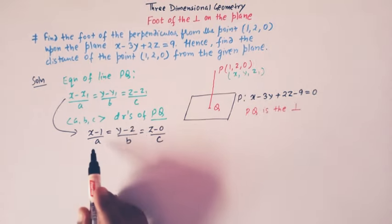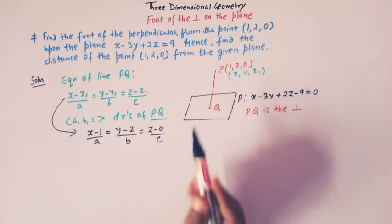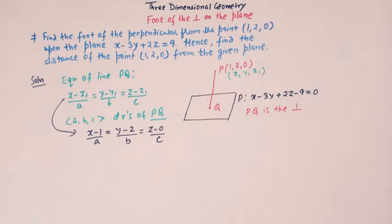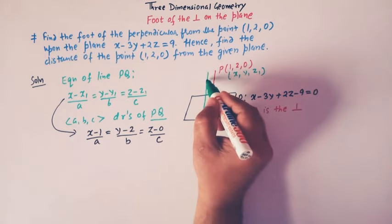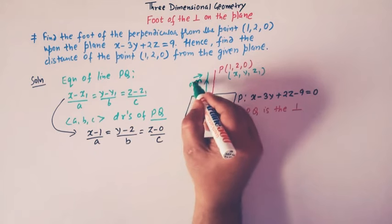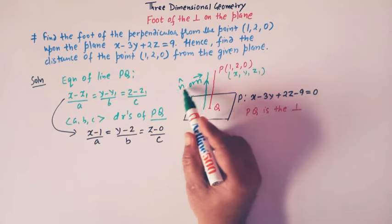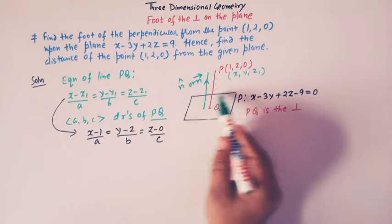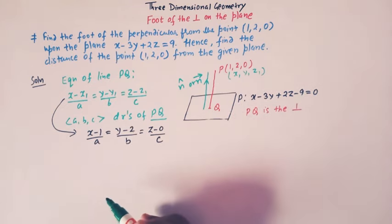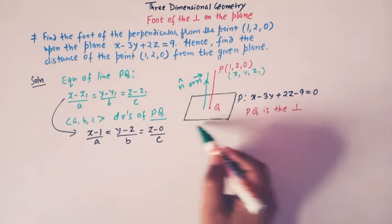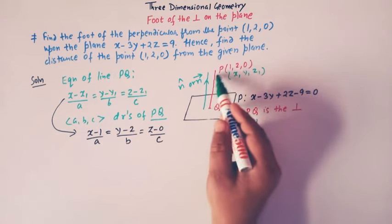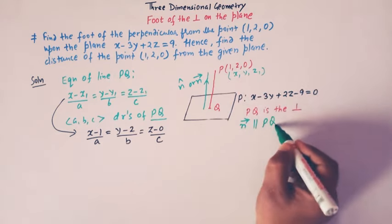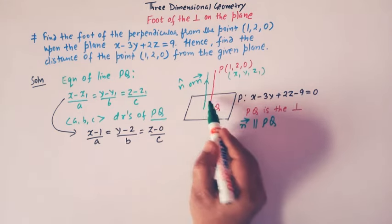Now we do not know the direction ratios of the line PQ. So here what we will do — we will use an important concept. The concept is that the normal vector n to the plane is perpendicular to the given plane P. So when this normal is perpendicular to this plane P, then obviously this vector n is parallel to the line PQ. So these two vectors or lines are parallel.